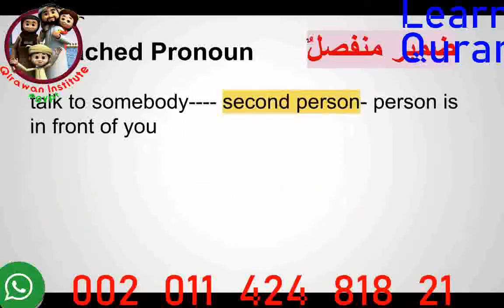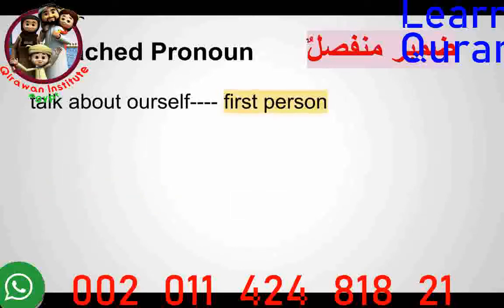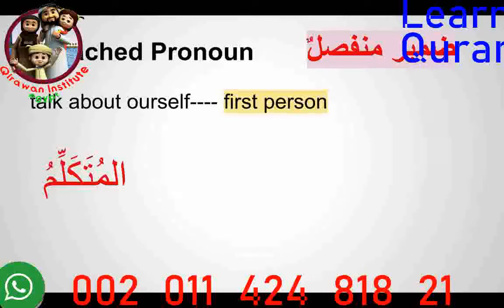We also use pronouns when talking to someone in front of you — using 'you.' That is called Al-Mukhatib, the second person. And we have personal pronouns for the first person, like 'I' or 'we,' which is called Mutakallim. So we have Al-Ghaib (third person), Al-Mukhatib (second person), and Mutakallim (first person).